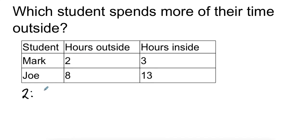So I know the ratio between these two is 2 to 3 for Mark to see who spends more time outside. And Joe, that's 8 to 13. Now I can see that we have a common multiple for the hours outside of 8, which means I can actually save some time because I don't have to do anything to this ratio because I know that's just multiplied by 1.